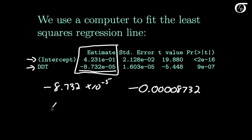And so our least squares regression line, and this is then simply y hat, is equal to our estimated intercept, which is 0.4231 minus 0.00008732 times x.